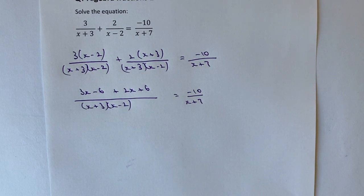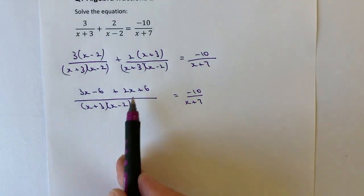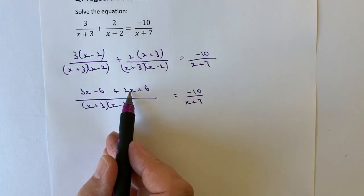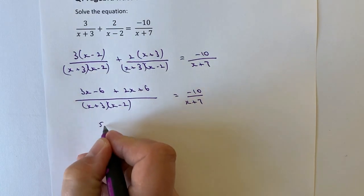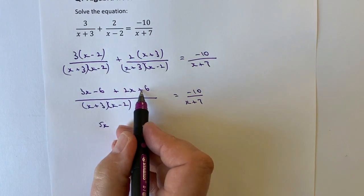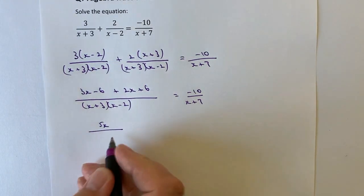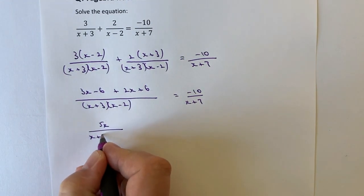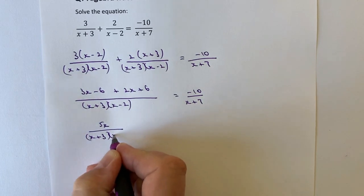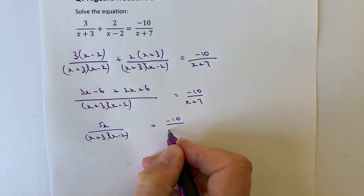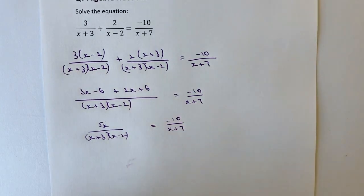Let's just tidy it up a tiny little bit more. I'm just going to pull the like terms together. I've got 3x plus 2x, which is 5x. And minus 6 plus 6 is 0, so those cancel themselves out. I just get left with 5x over (x+3) times (x-2), and that equals minus 10 over x plus 7.